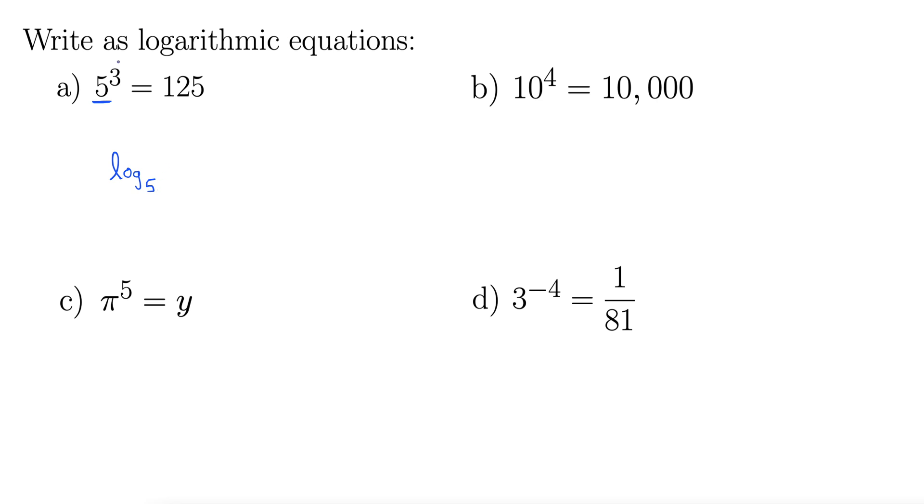Now this exponent here goes way out to the outside of your logarithmic equation, so this is going to be equals 3 out here. And then the 125, or whatever is here on the other side of the equal sign, goes inside the log. So log base 5 of 125 equals 3 is the logarithmic equation that corresponds to that exponential equation.